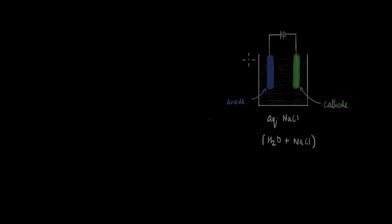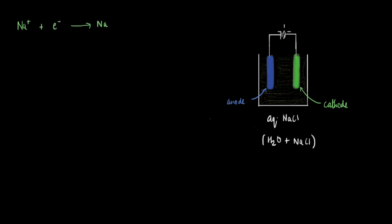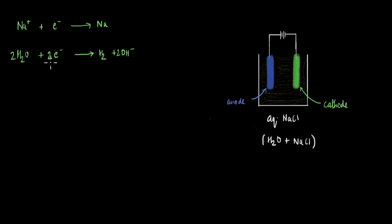Let's see what's happening. Let's consider this cell with the electrolyte as aqueous NaCl, which is a solution of water and NaCl. Let's look at the reactions that take place at the electrodes, starting with the cathode. The cathode is connected to the negative terminal, so sodium ions move towards it, gaining an electron and forming sodium atoms — this is one possible reaction, the same as in molten NaCl. But since we have used aqueous NaCl and there is water present, one more possible reaction can take place: water can gain electrons and get reduced to form hydrogen gas and give hydroxide ions.